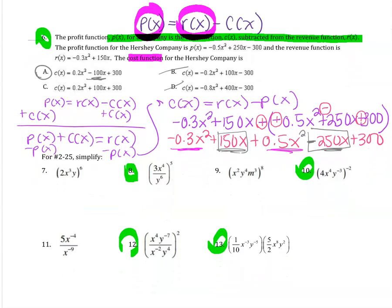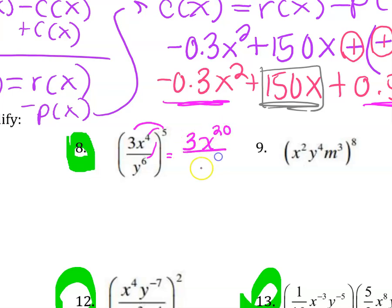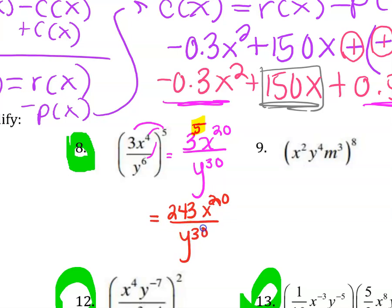Moving on to exponent rules — for question 8, any time you have a product or a quotient raised to an outside exponent, that outside exponent applies to everything on the inside. Sometimes students will just multiply the variable exponents and forget that it's technically 3 to the 5th as well. Make sure you don't forget the coefficient: 3 to the 5th is 243, and your final answer is 243x to the 20th divided by y to the 30th.